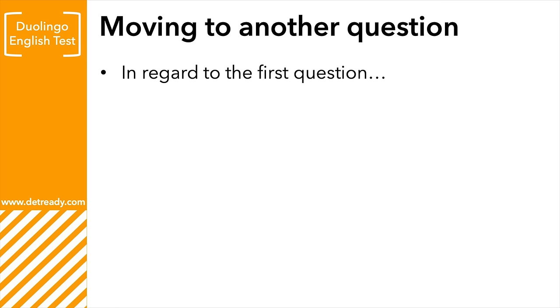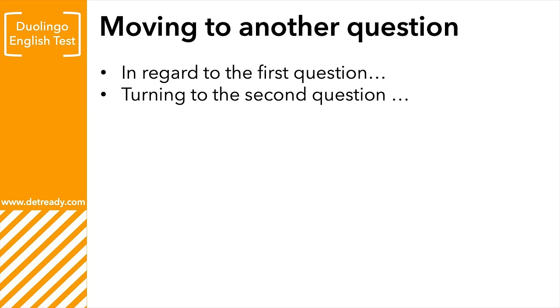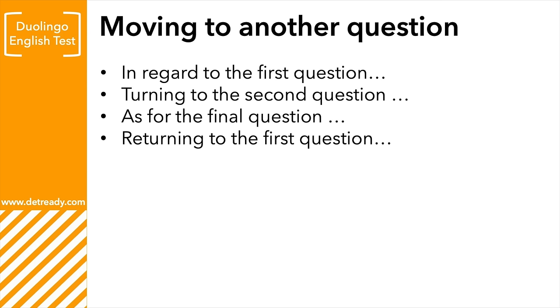For example, you can use: 'In regard to the first question,' 'turning to the second question,' or 'as for the final question.' You can use these three phrases to move from the first, second, and third questions — they're a great way to transition and mean you don't have to link ideas together to go from question to question. On top of that, if you want to go back to a question, you can use: 'Returning to the first question,' or 'Returning to the second question.'